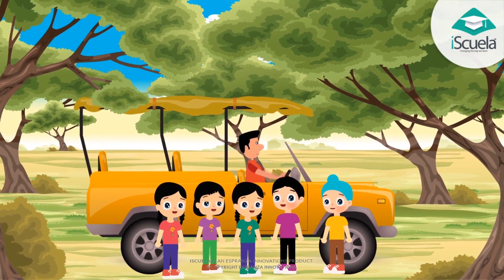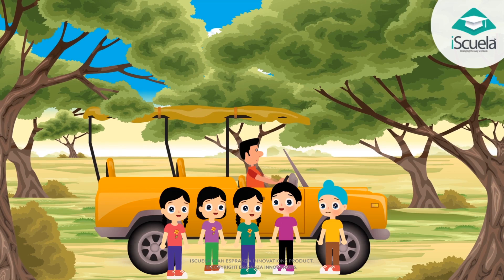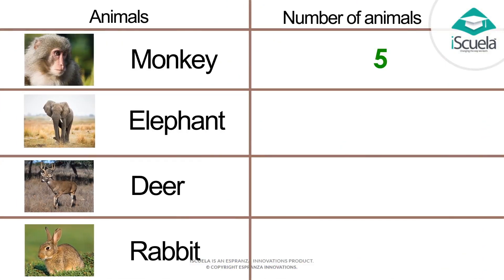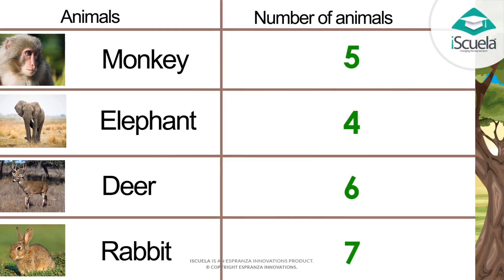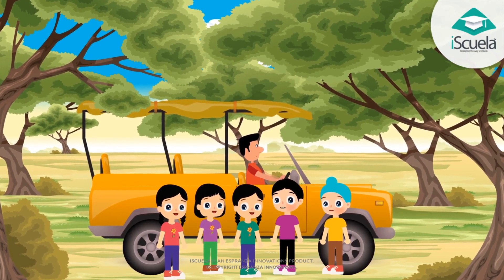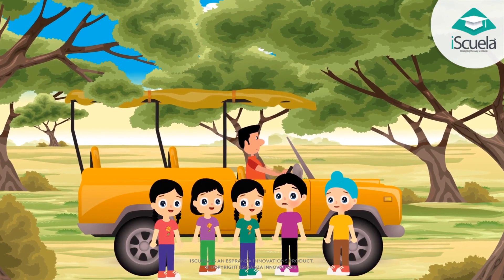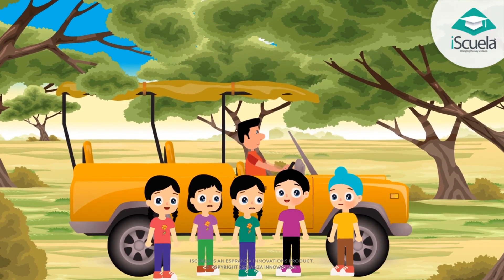And Tanisha, you will count the number of rabbits. The number of monkeys is 5. There are 4 elephants. There are 6 deers. And the number of rabbits is 7. Wow, that's really very easy. Now we know the number of all the animals.